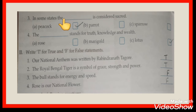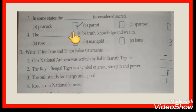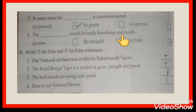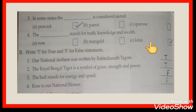Third: in some states the peacock is considered sacred. Which bird is considered sacred? That is the peacock. Fourth: which symbol stands for truth, knowledge and wealth? Lotus stands for truth, knowledge and wealth.